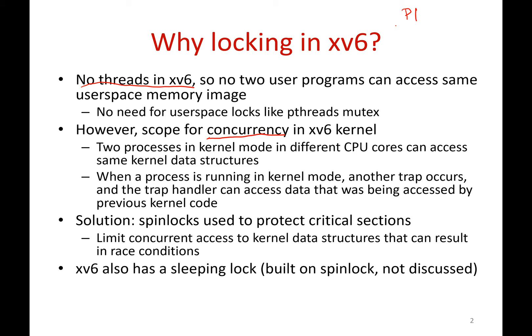Why is that? You can have a situation where a process P1 has gone into kernel mode, another process P2 has also gone into kernel mode on a different CPU, and both of them are accessing the same kernel data structures. In this case, there is a possibility of concurrent access to shared data, and therefore you will need to use locks to avoid race conditions when accessing this shared data.